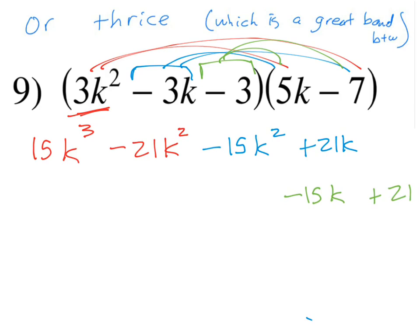So now we have all our terms here. We have to figure out which of these combine. Well, there's no other terms with k to the third, so that one's going to stay, 15k to the third. There are two terms with k squared, and they're going to combine. So we got negative 21 and negative 15k squared. It's going to give you negative 36k squared.